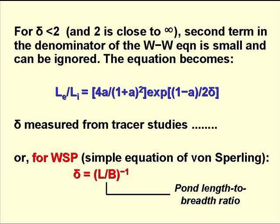For dispersion numbers less than 2, and with dispersion number 2 is actually quite close to infinity, the second term in the denominator of the Wehner-Wilhelm equation is small, and can be ignored, so that for most reactors, the equation becomes Le over Li equals 4A over 1 plus A all squared, all times e to the power 1 minus A all over 2 delta, where A equals, as before, the square root of 1 plus 4K1 theta delta.